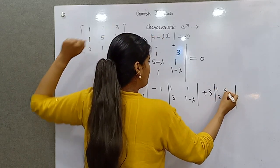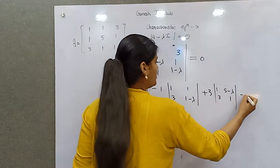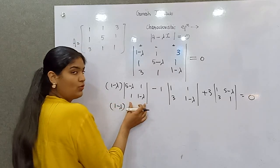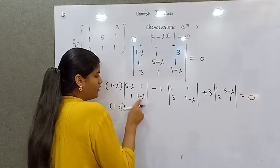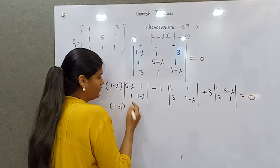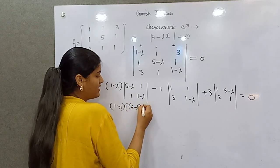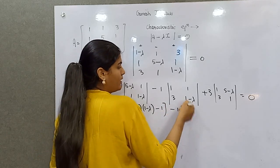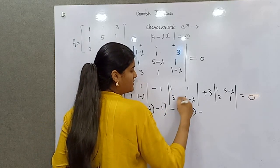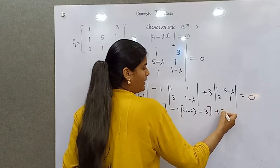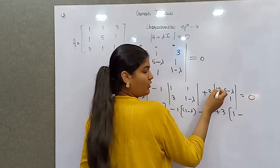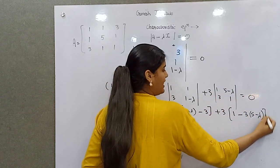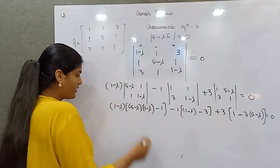1, 3, 5 minus lambda, and 1. It should be 0. Now you know how to solve two by two determinant. You have to multiply these two minus these two. So let's begin: (5 minus lambda)(1 minus lambda) minus 1. Then 1 minus 3 times 1 is 3, plus 1 times 1 is 1. Cross multiply, and 3 times (5 minus lambda), it should be 0.